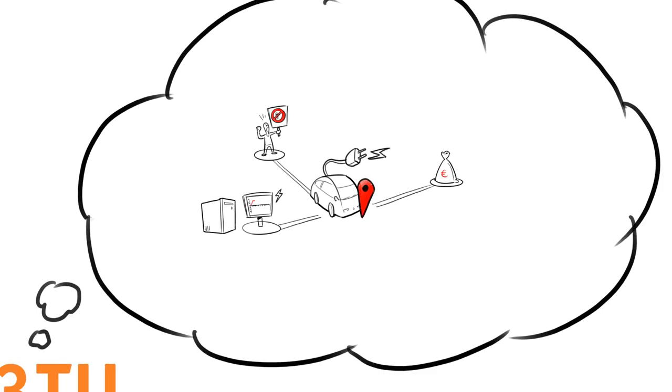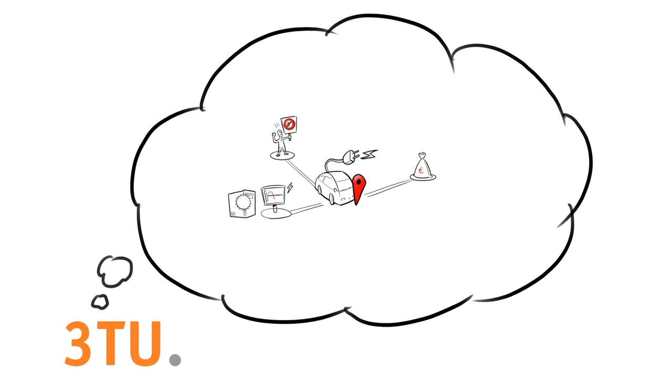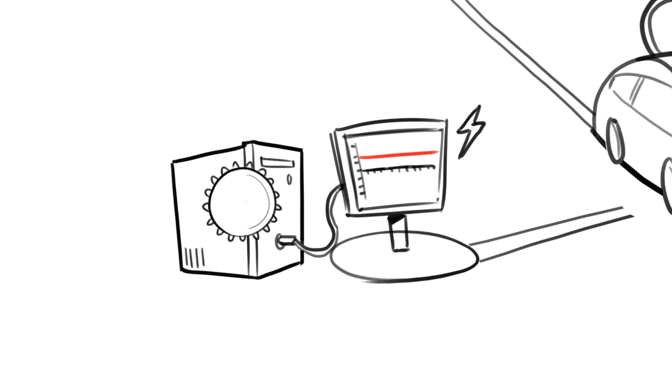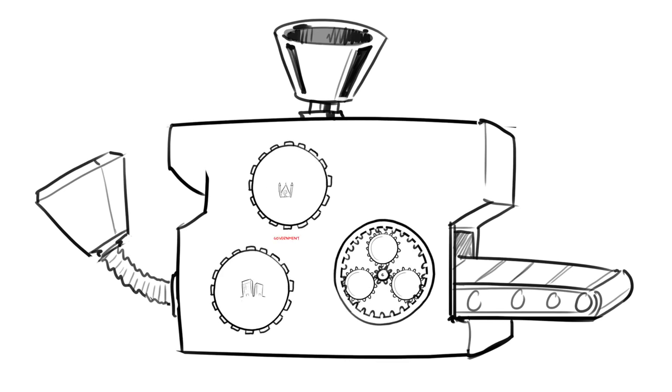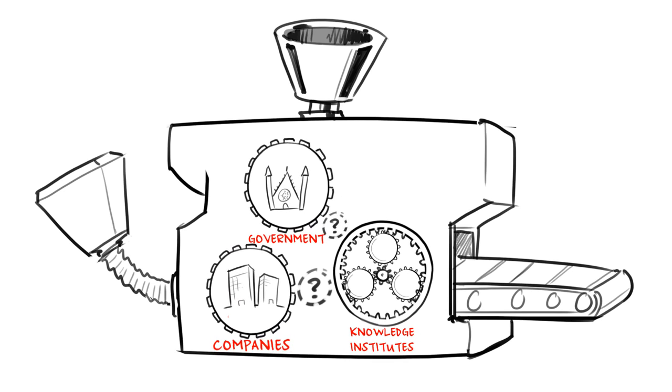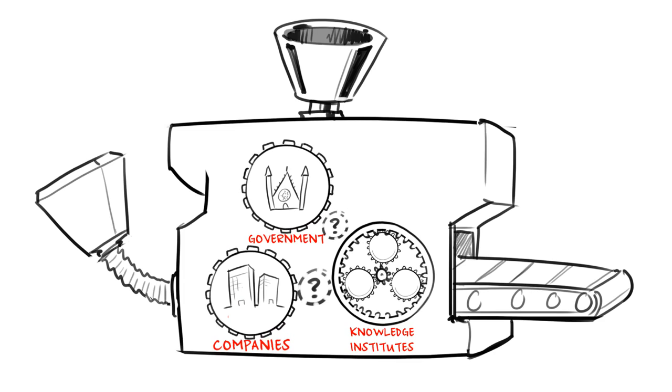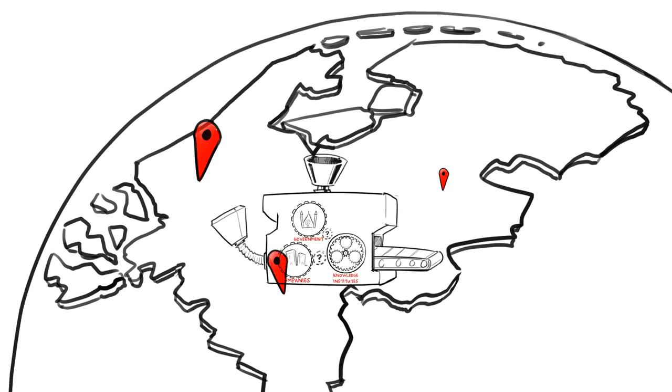3TU, which represents the three Dutch universities of technology, understands that, and technology is a common element in the required solutions. Back to the main problem. How can we get parties to work together in the new situation? Fortunately, there are promising examples. These 3TU projects demonstrate essential lessons on how we should design our projects.